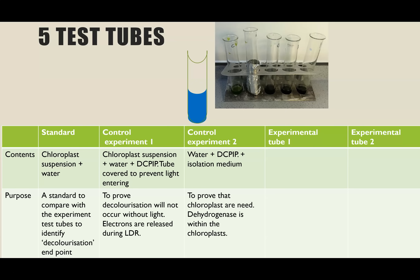My second control experiment contains distilled water and DCPIP but no chloroplast suspension. What I'm going to be proving with this control is that DCPIP does not decolorize unless chloroplasts are present, showing that the dehydrogenase enzyme within the chloroplasts is required. I still add the isolation medium — just so we can show it's not anything within that medium which is causing the color change, but rather the chloroplasts themselves.